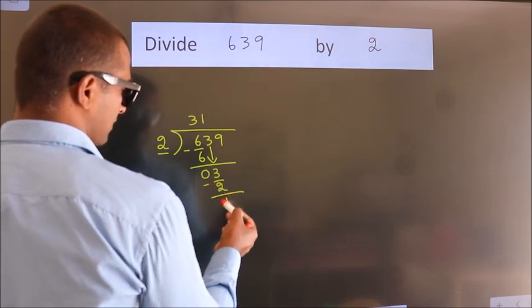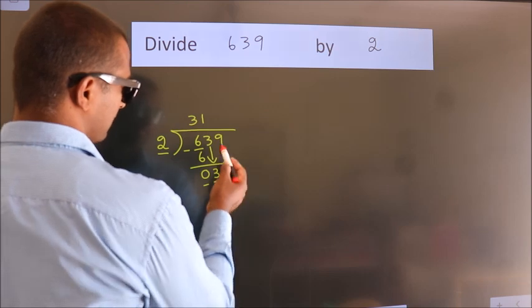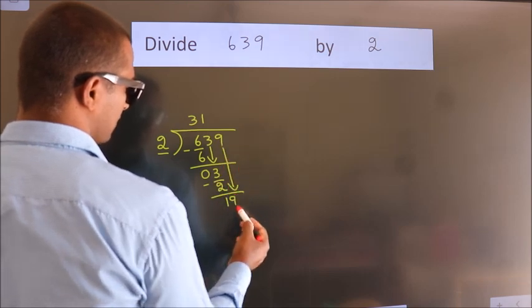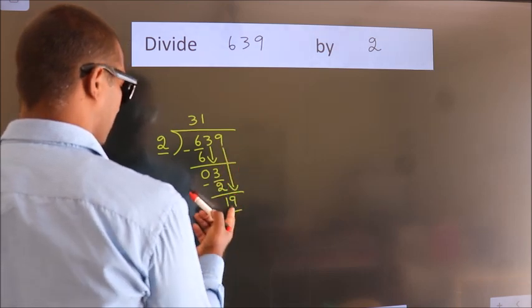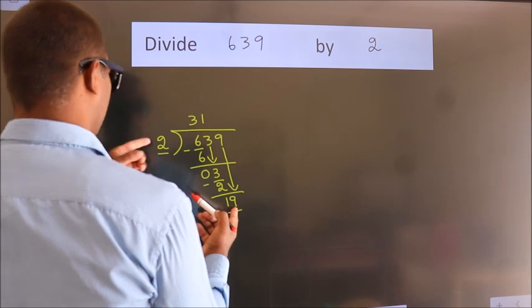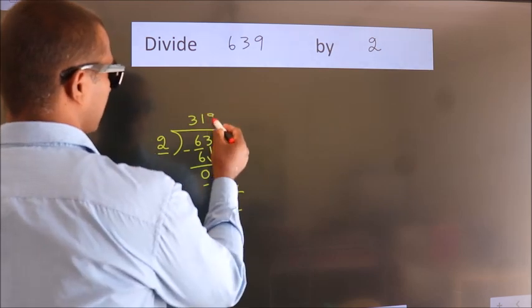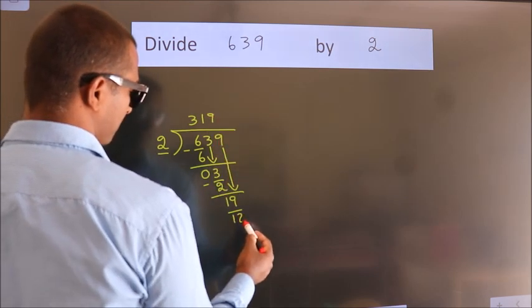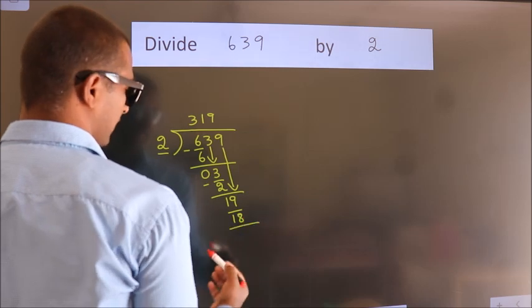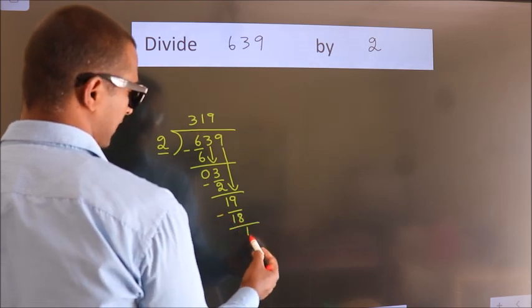After this, bring down the beside number. So 9 down. So 19. A number close to 19 in 2 table is 2 times 9 is 18. Now we subtract. We get 1.